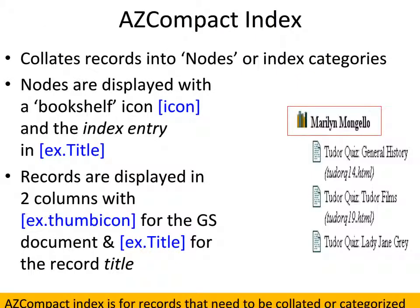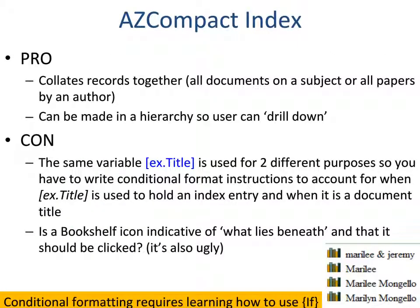Except for ISBN, all of those index types are going to use the AZ compact list index, because they'll all collate records into categories. This is quite common — most of your indexes will be AZ compact lists. The downside is it makes formatting more difficult because there are a number of Greenstone variables you have to use, plus you're going to have to use conditional formatting. You also have to be very careful to be consistent in your data entries, otherwise you're not going to get the records collated together.